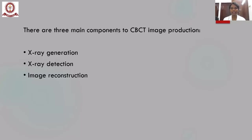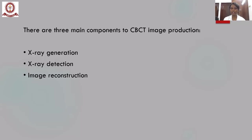There are three main components to CBCT image production. First is X-ray generation — as the rotating gantry makes a rotation, X-rays are generated. Second is X-ray detection through the flat panel detectors. Each basis image is rapidly processed by the flat panel detectors, and pixel data are continuously sent to the computer software. The software gathers the data and assigns a particular grayscale value depending upon the electrical voltage in each pixel. Once grayscale values are set for individual basis images, they are reconstructed to form a 3D volumetric dataset.